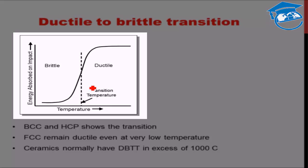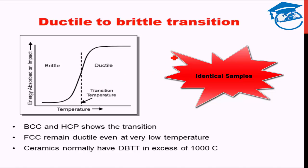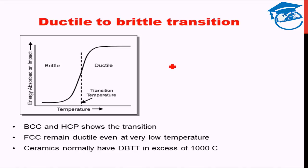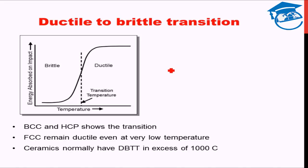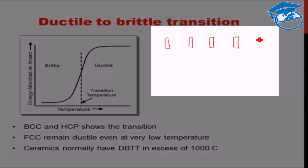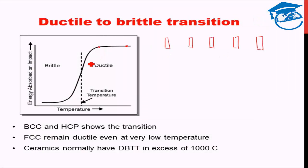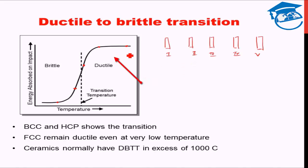How do we find that temperature? We create many identical samples and break them by impact. There are impact tests such as the Charpy impact test and the Izod impact test that can be used to determine how much impact energy is absorbed by a material to fracture. Several samples — say five — are fractured using impact testing at five different temperatures, and the energy absorbed for fracturing each sample is noted.